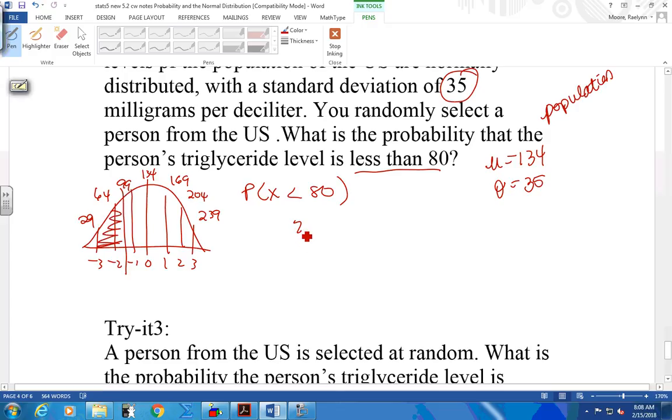So let's use your z-score formula. I want you to start memorizing that. x is your 80. Your mean is 134. And your standard deviation, 35. So you come up with a z-score of negative 1.54. And isn't that what you expected? Didn't you expect it to be between negative 1 and negative 2? So I know I'm on track.